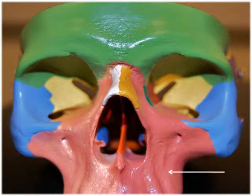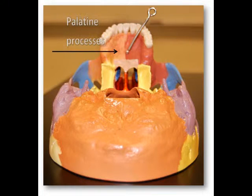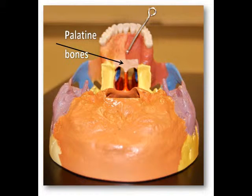They form the floor of the nasal cavity and part of the orbital floors and lateral walls of the orbit. They also form most of the hard palate, which is the bony roof of the mouth formed by the palatine processes and horizontal plates of the palatine bones.